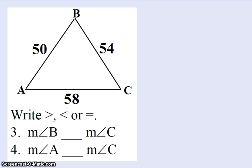My next example, I have triangle ABC. They give me side lengths of 50, 54, and 58. Looks like we're going to do some inequalities looking at greater than, less than, or equal to. We're going to compare the angles. So before I actually get into problems three and four, let's spend a little bit of time in our picture.